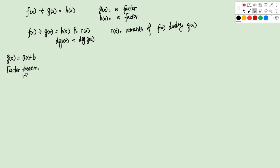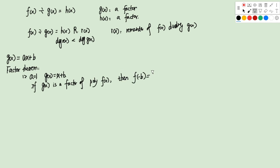The first part is when a equals 1, so g is just x plus b. If g is a factor of polynomial f, then f(-b) equals 0. For example, if x plus 1 is a factor of (x+1)², then f(-1) equals 0. That's the first conclusion of the Factor Theorem.